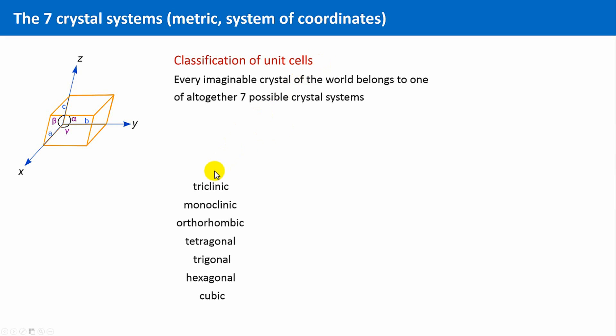And these are the names for them, which you simply have to memorize. They are listed here roughly according to increasing symmetry. Triclinic and monoclinic, orthorhombic, tetragonal, trigonal and hexagonal. And finally, cubic.